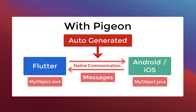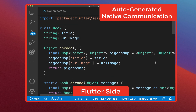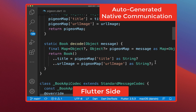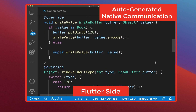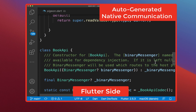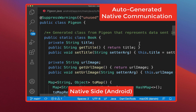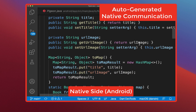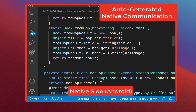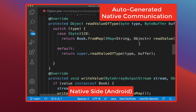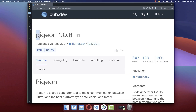How to generate and call Android native code using the Pigeon package, which is a native code generator tool that makes communication between Flutter and the Android native host platform highly convenient and typesafe.